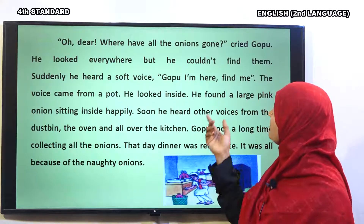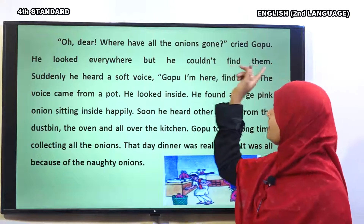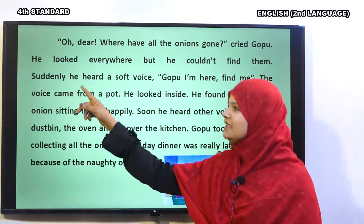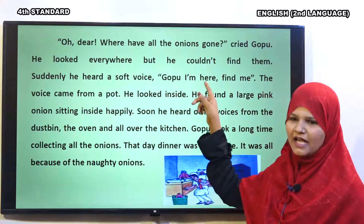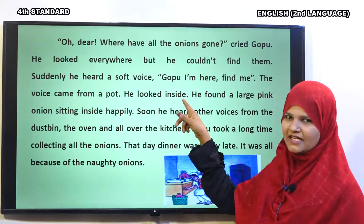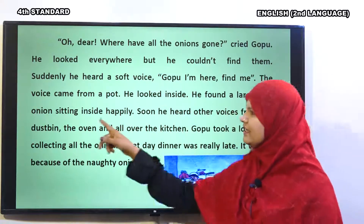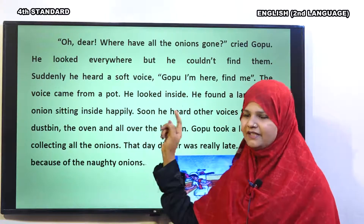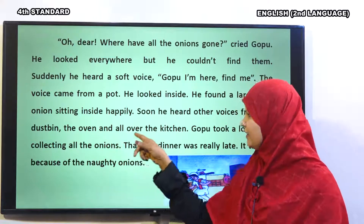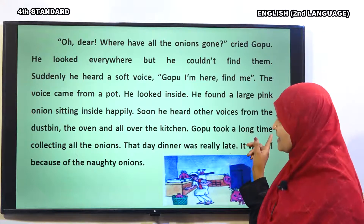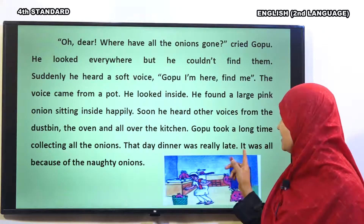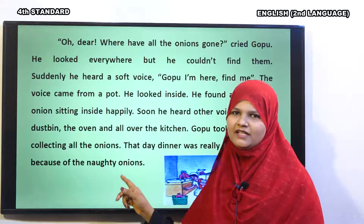Oh dear! Where have all the onions gone? Cried Gopu. He looked everywhere, but he could not find them. Suddenly, he heard a soft voice. Gopu, I am here. Find me. The voice came from a pot. He looked inside. He found a large pink onion sitting inside happily. Soon, he heard other voices from the dustbin, the oven and all over the kitchen. Gopu took a long time collecting all the onions. That day, dinner was really late. It was all because of the naughty onions.